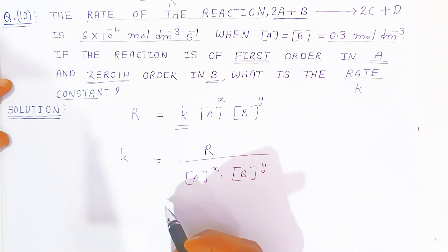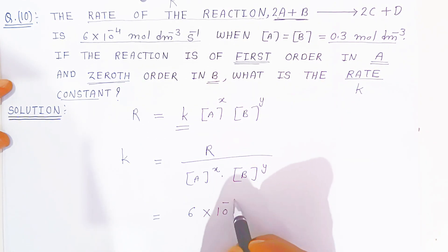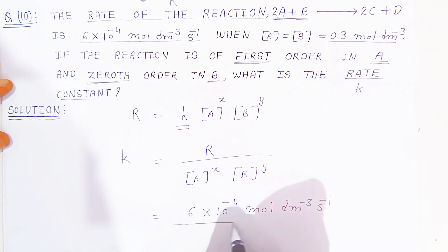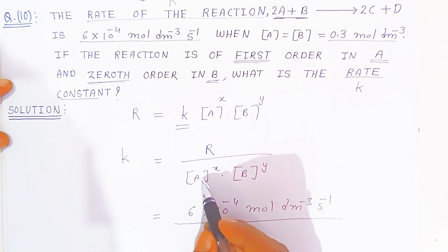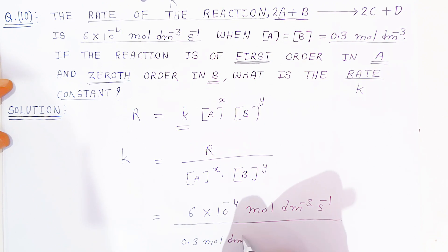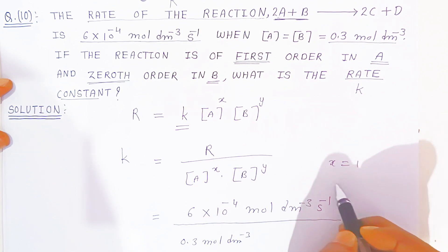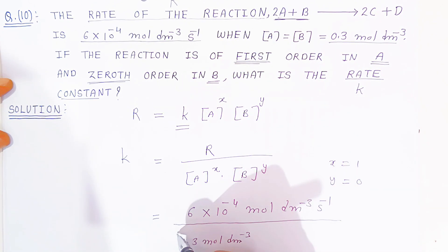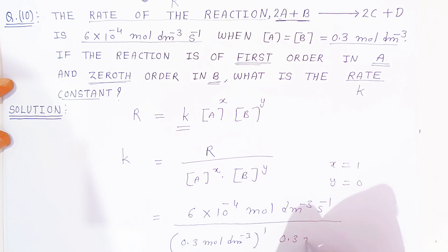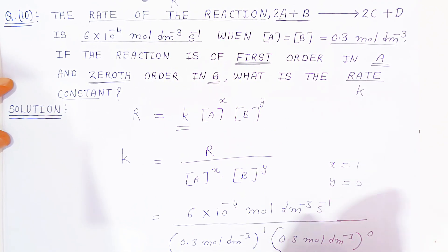Now just put in the values. The rate of reaction is 6×10⁻⁴ mol per dm³ per second. You divide this by the concentration of A, which is 0.3 mol per dm³, raised to x which is 1, and concentration of B, which is 0.3 mol per dm³, raised to y which is 0. Anything raised to 0 is always 1, so that term becomes 1.